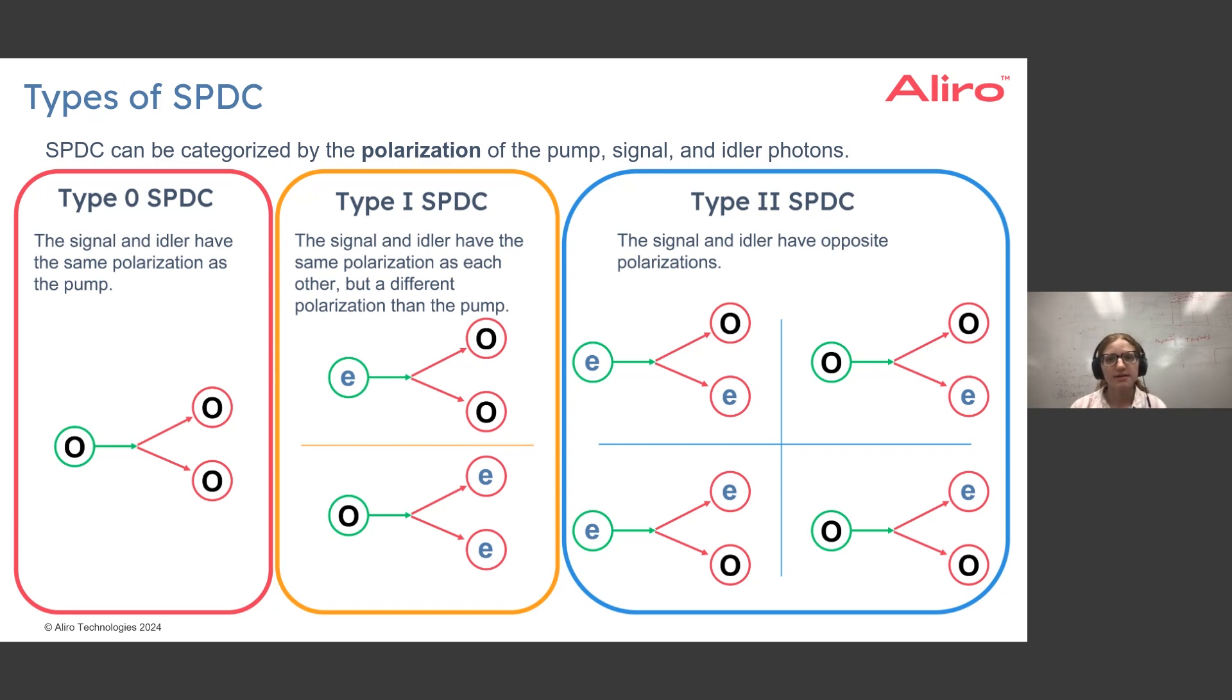We can have Type 2 spontaneous parametric down conversion, and this is describing the case where the signal and idler have opposite polarization. There are different combinations we can have here with respect to the ordinary and extraordinary polarization of the signal, idler, and pump. The important thing is that the signal and idler have to have opposite polarizations to each other.